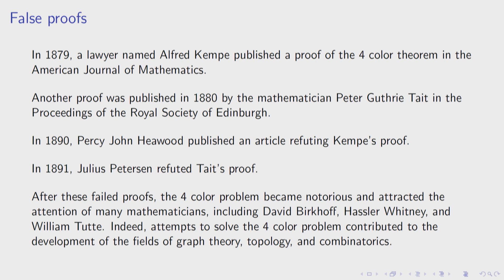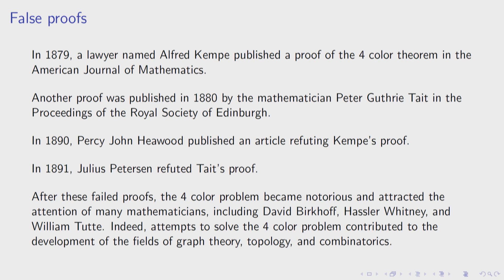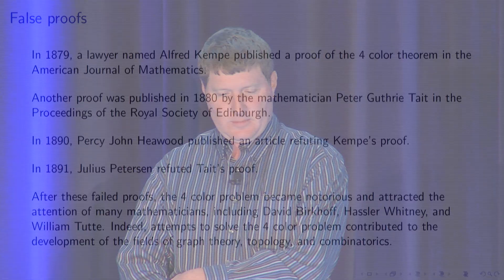He communicated this to some mathematicians who became interested in the problem. In 1879, Alfred Kempe published a proof of the four-color theorem in the American Journal of Mathematics — he wasn't a professional mathematician. Then just a year later, Peter Guthrie Tait published another somewhat different proof in the Proceedings of the Royal Society of Edinburgh. Then in 1890, Percy John Heawood published an article that refuted Kempe's proof — about 10 years later, he found it was actually wrong. And then in 1891, Julius Petersen also refuted Tait's proof.